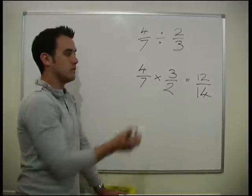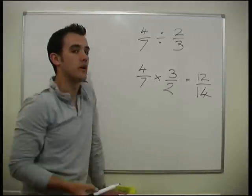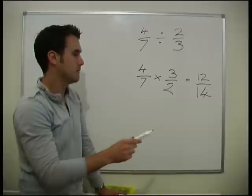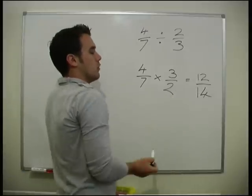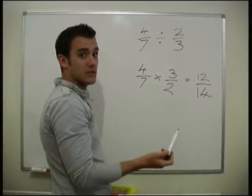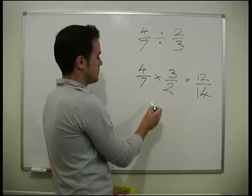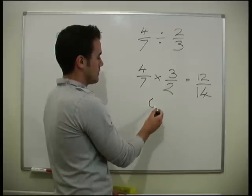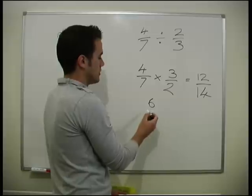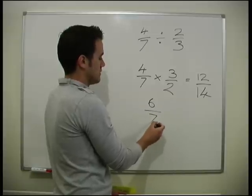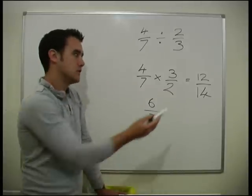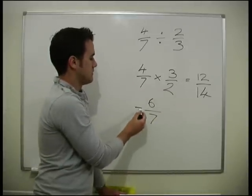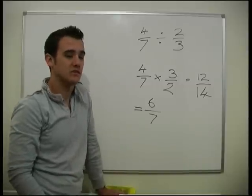Okay, so we have 12 over 14. Will that simplify? It certainly will. What will go into both of these? Well, you can see 2 will go into both of these. 2 will go into 12, 6 times. 2 will go into 14, 7 times. So 12 14ths equals 6 7ths.